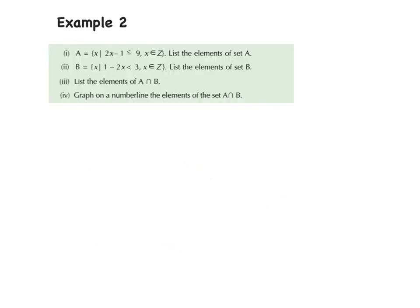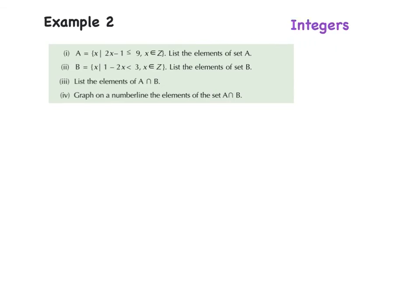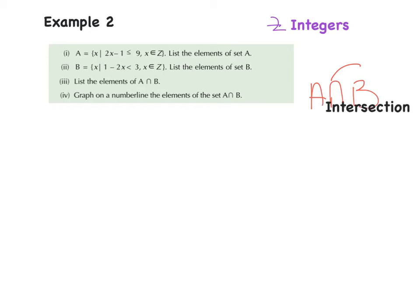Example two: A is defined as 2x minus 1 ≤ 9, and x is an element of ℤ — integers, meaning any positive or negative whole number. We're asked to list the elements of A ∩ B. We solve each inequality separately and then find A intersection B — the values they have in common. I'll first solve A: 2x - 1 ≤ 9.